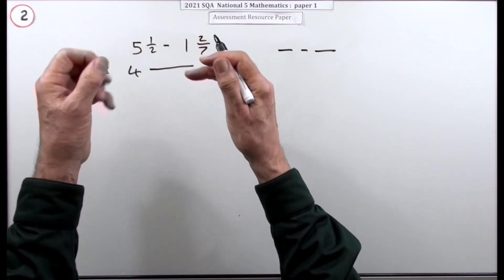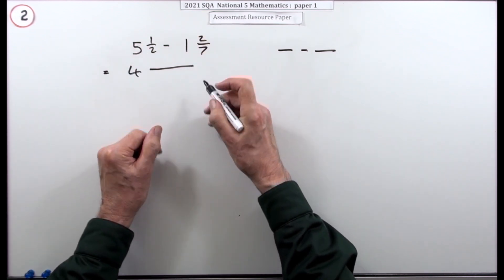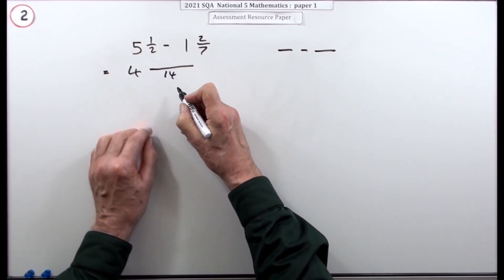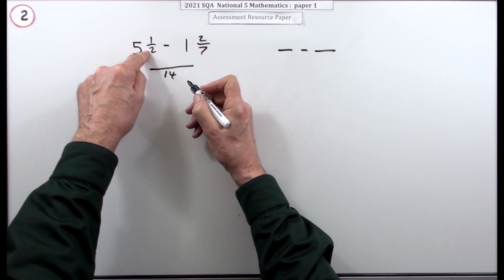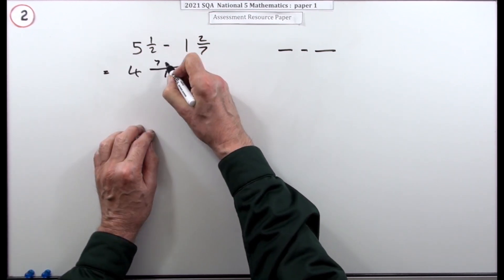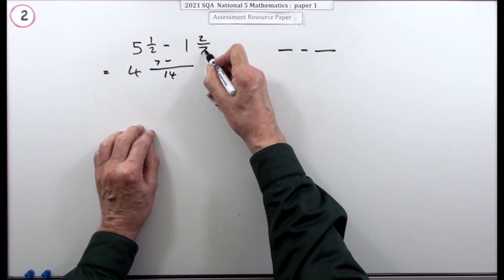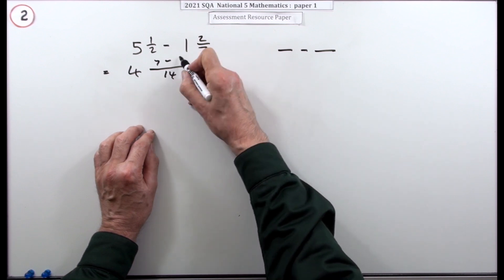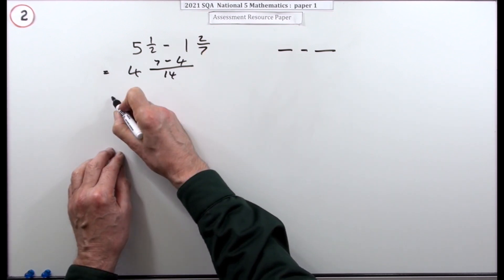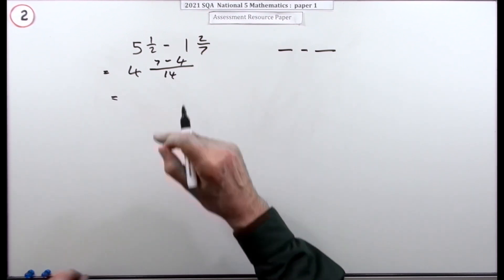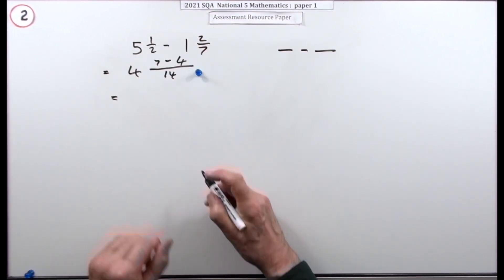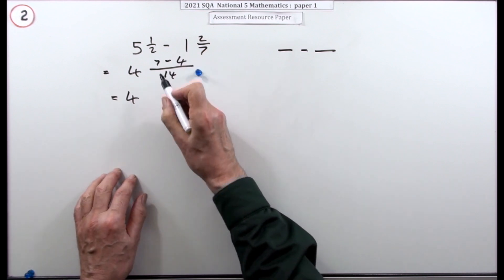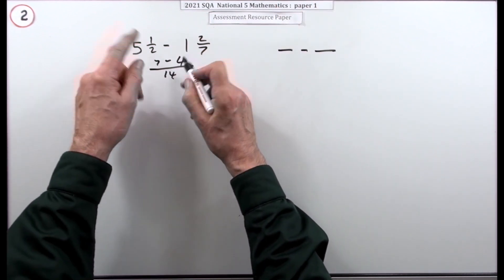To subtract those two fractions you need a common denominator. Fourteen is the first number they both go into: two times seven is fourteen. So seven ones are seven, and two twos are four. Getting the 14 was a mark, and finishing it off — seven take away four — gets the other mark.